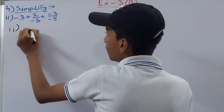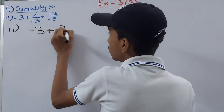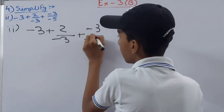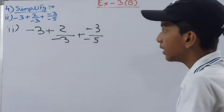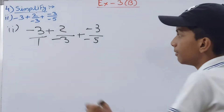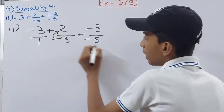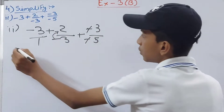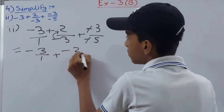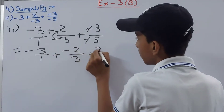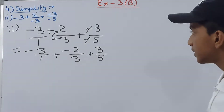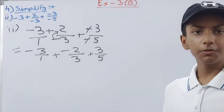In the second part we have -3 + 2/(-3) + (-3)/(-5). Here -3 can be written as -3/1. The minus sign from the denominator of 2/(-3) moves to the numerator, and the two negatives in (-3)/(-5) cancel, giving us -3/1 + (-2)/3 + 3/5.